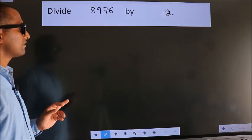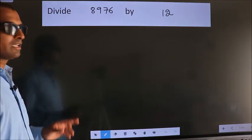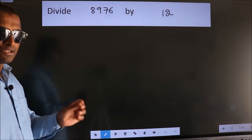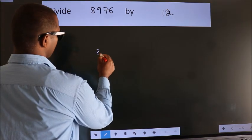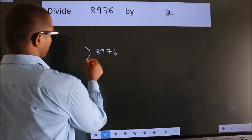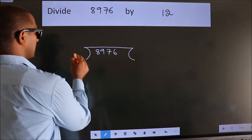Divide 8976 by 12. To do this division, we should frame it in this way. 8976 here, 12 here.